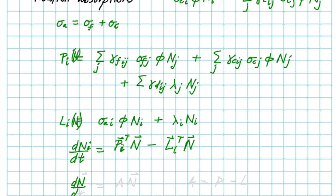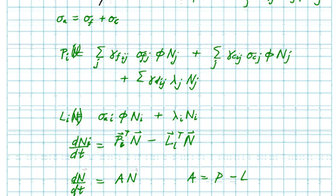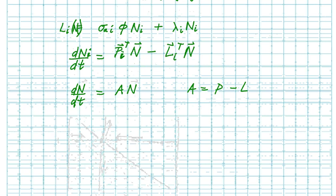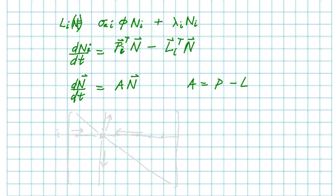These would be dot products and this will give you one row in the matrix equation. So the matrix equation would just be dN/dt equals A times N, where we let A equal P minus L. So we've given the details now about how we define the Bateman equation.